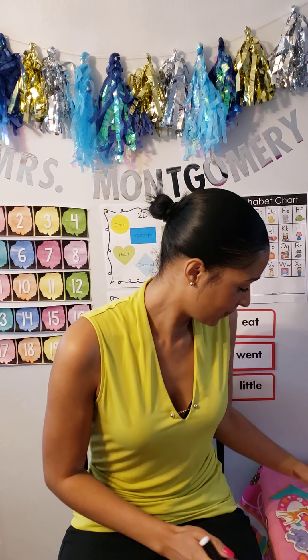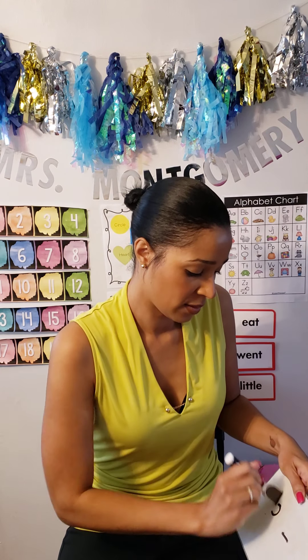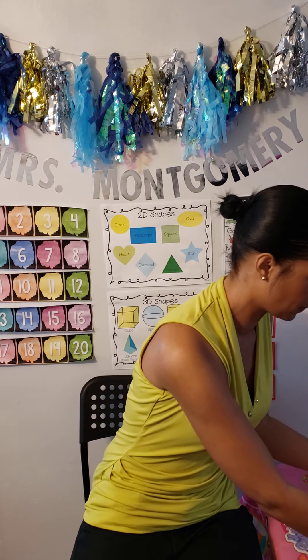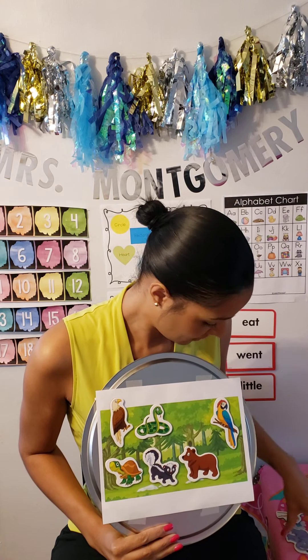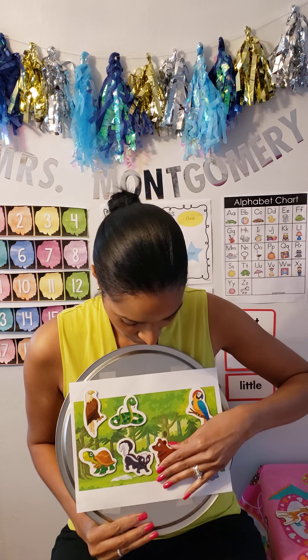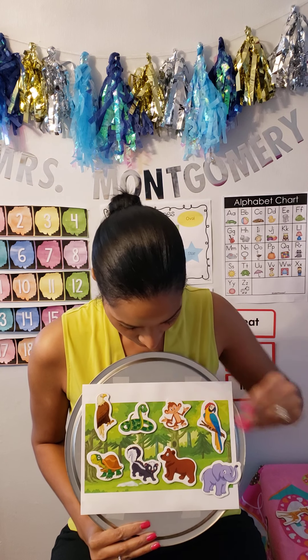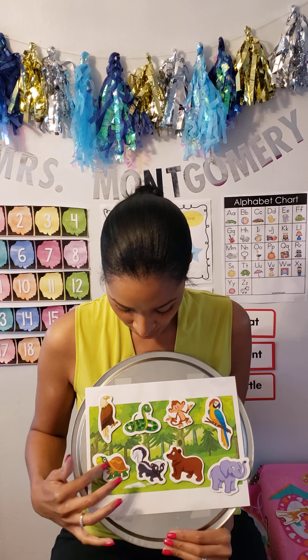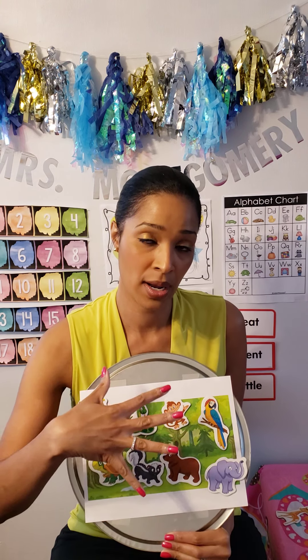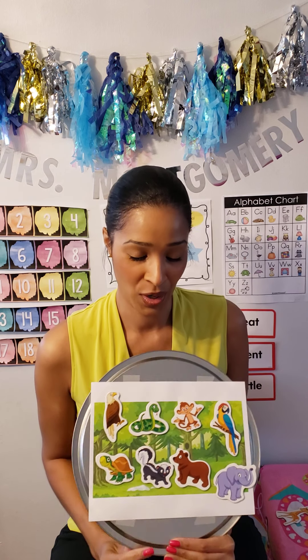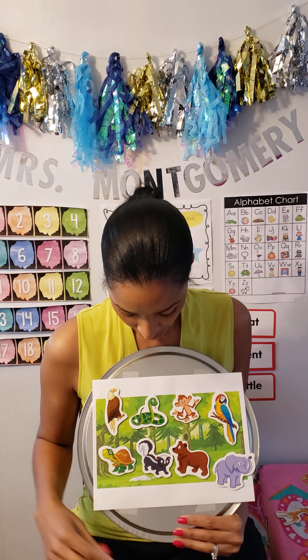Now we have five animals in the forest and three more animals join them. Did we get more animals or did we get less? More — so we are adding. We got more animals. We had five and three more came. Let's count how many animals there are now: one, two, three, four, five, six, seven, eight animals.